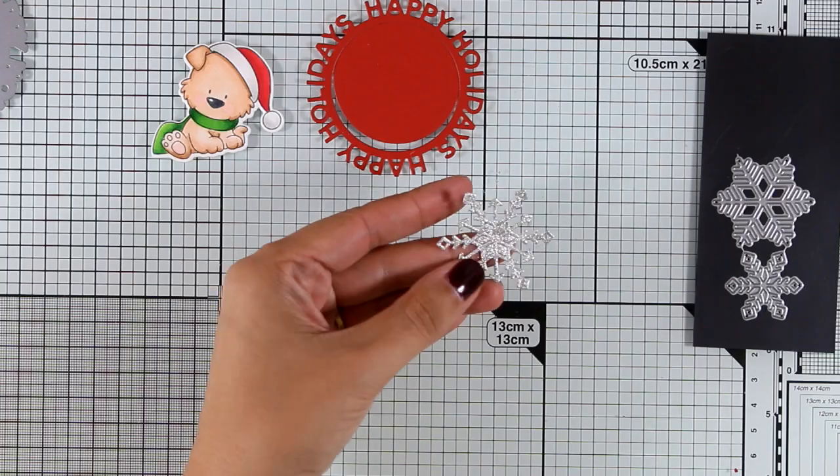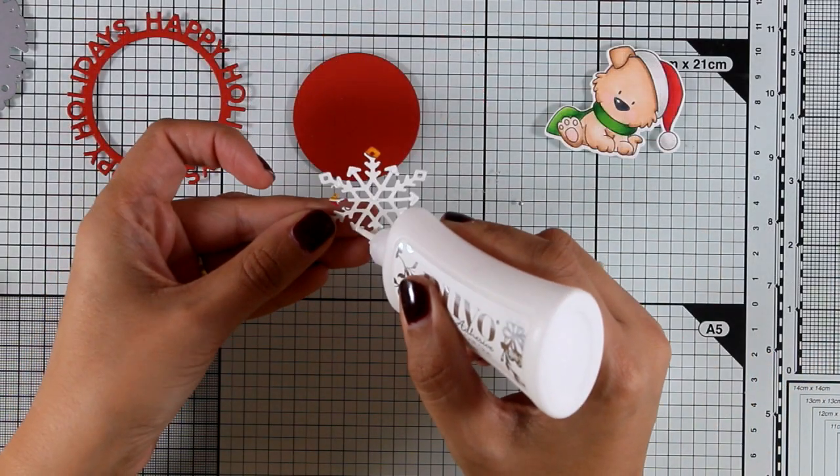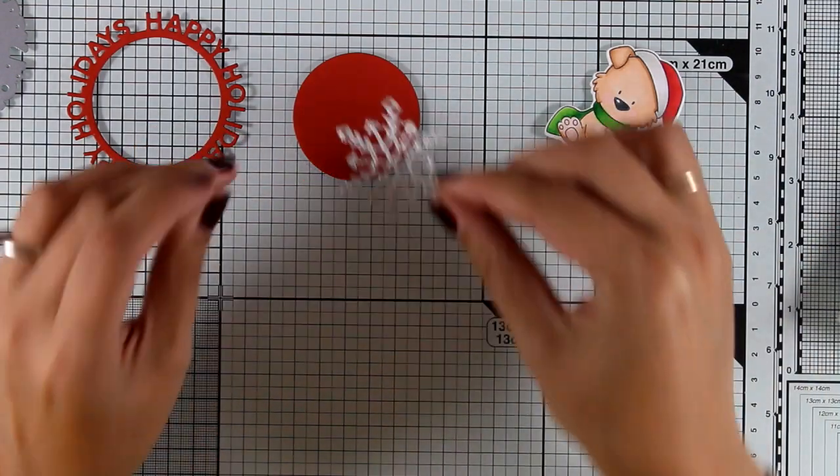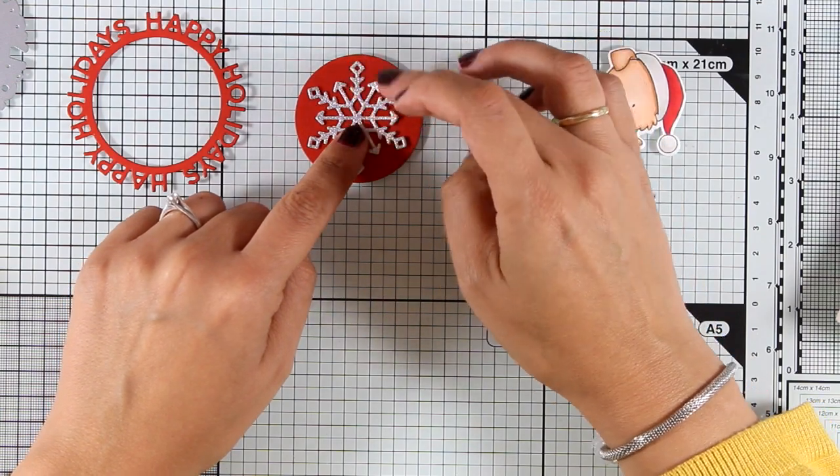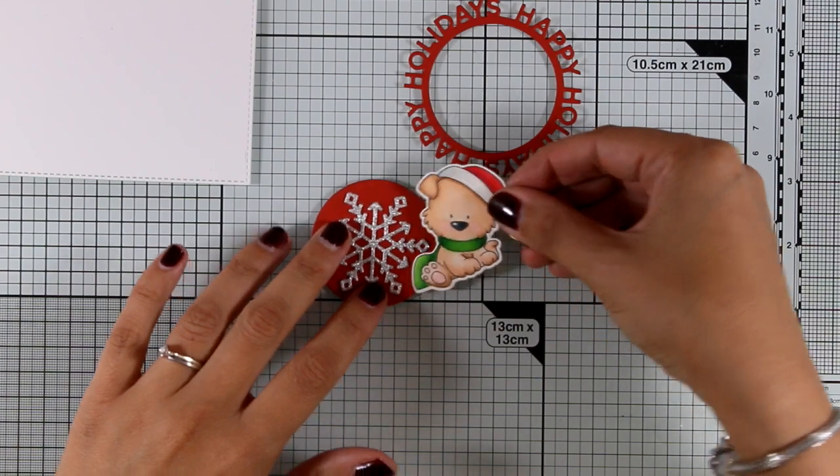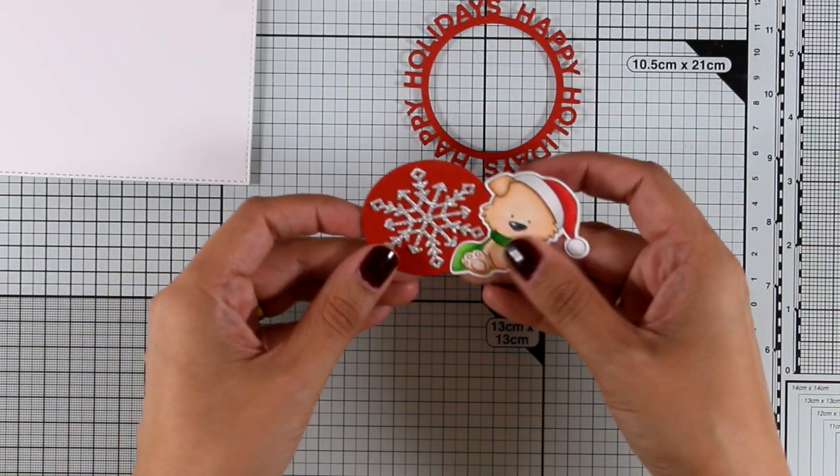And before cutting it out, I made sure that it fits perfectly inside my circle. At the back of the snowflake, I'm going to add a few dots of glue in different areas. And I'm going to stick that at the center of my circle. I have added some tape adhesive at the back of my puppy. And I'm going to stick him just next to the snowflake. And look how nicely they nest together.